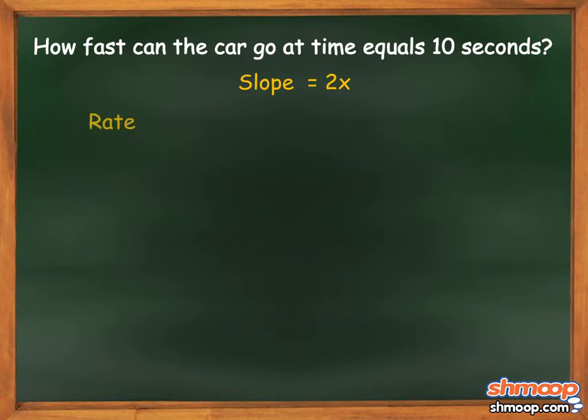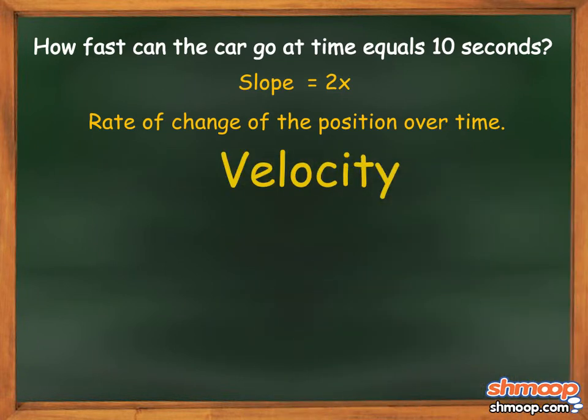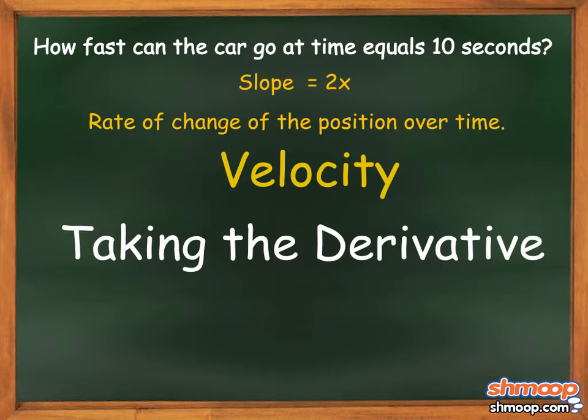What we just found is the rate of change of the position over time, which if you think about it, is just the velocity. This is also called taking the derivative of a function, which is presumably why you came to watch this video in the first place.